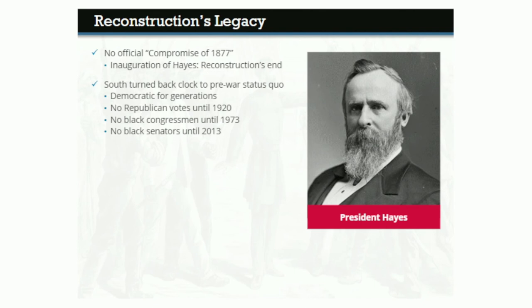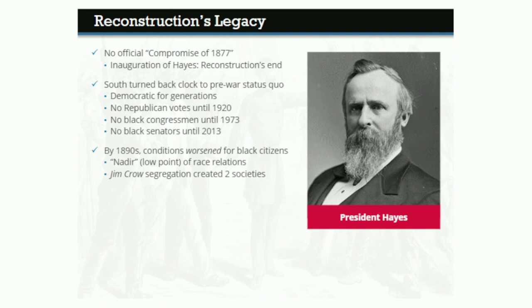For African Americans in the South, the end of Reconstruction meant that the 14th and 15th Amendments became laws in name only. By the 1890s, conditions actually worsened for black men and women — historians call it the nadir of race relations, the low point for black civil rights in America after the Civil War. Jim Crow segregation legally created two societies in the South: one for white citizens, and another separate but certainly not equal for black citizens. Lynching became frighteningly common, not peaking until 1892, and generations of Southern blacks remained trapped in poverty as sharecroppers.